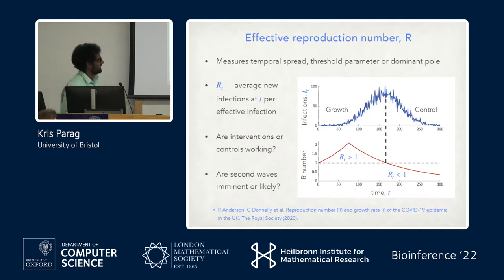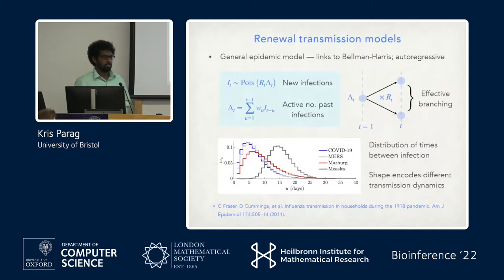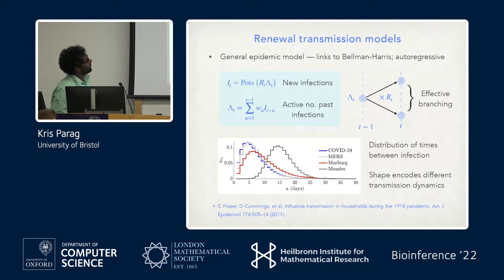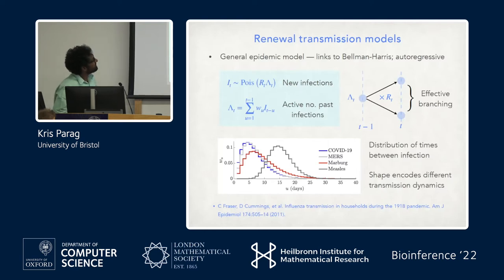You could use R(t) to ask whether control is working — if R drops below one after an intervention, it is. You could also ask if a second wave is likely by imagining a jump in R later on. A simple but still widely used model for describing this type of dynamics is called a renewal model, which has links to branching processes and autoregressive models.